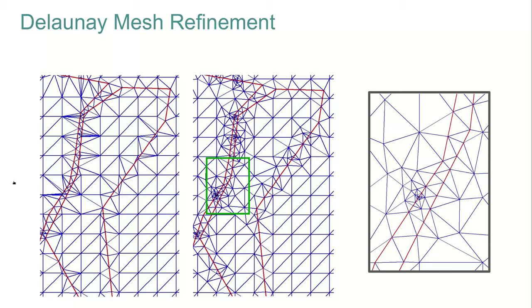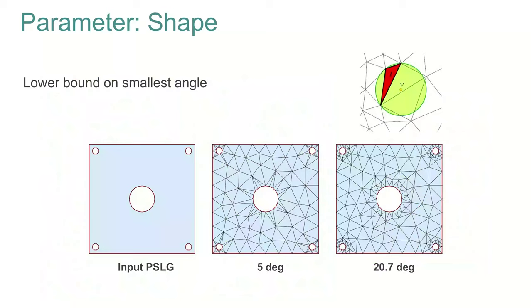Unfortunately, conforming is not sufficient to guarantee the minimal angle, as you can see here. One way to circumvent that is to add some vertices inside faces — this is how Delaunay mesh refinement works. Given an input polygon, the constrained Delaunay triangulation is computed and then made conformal. Then, as long as the minimal angle is larger than a user threshold, the circumcenter of the triangle with that angle is inserted into the triangulation.